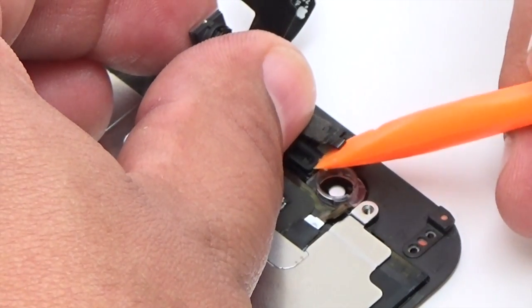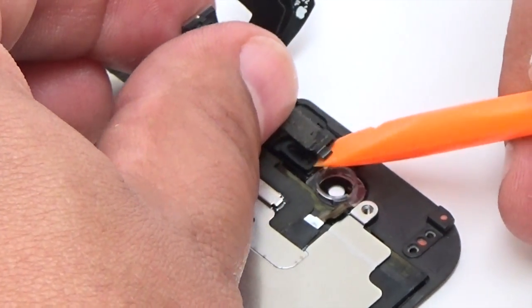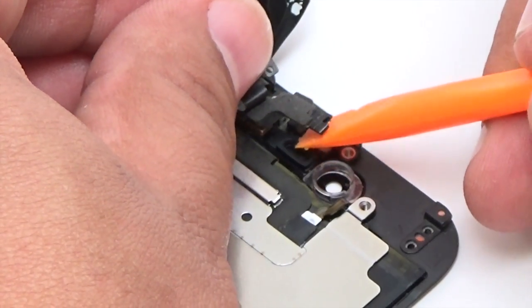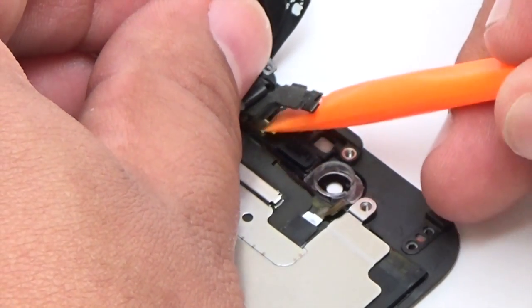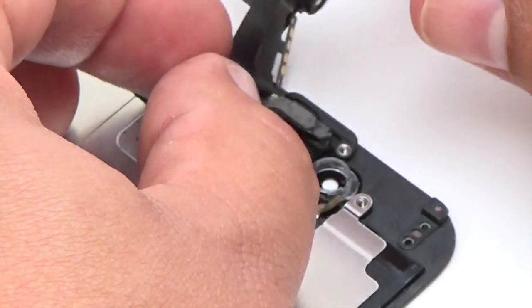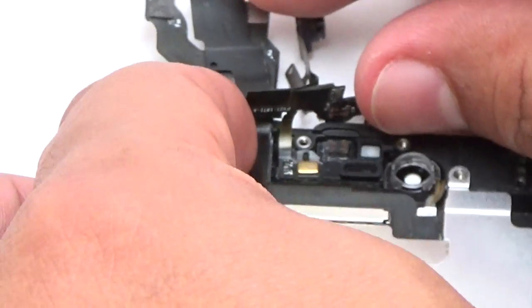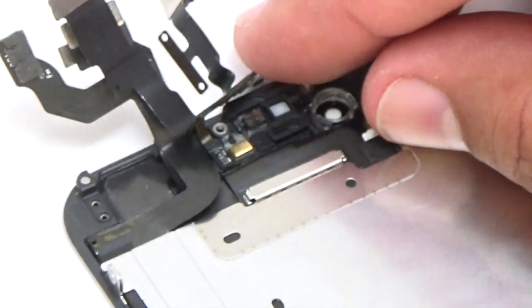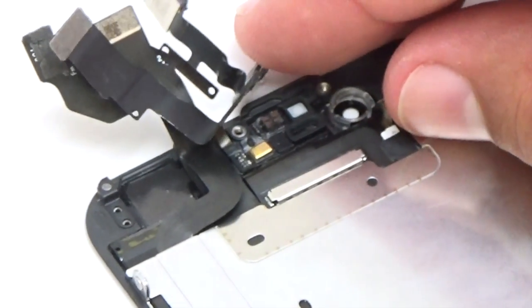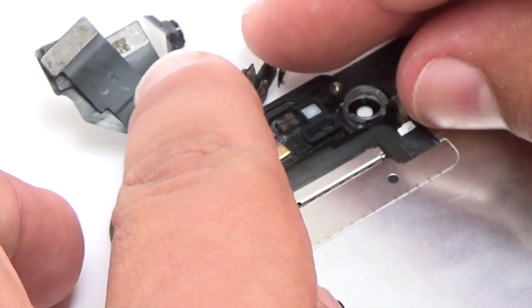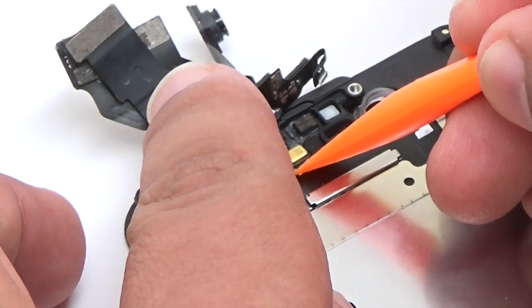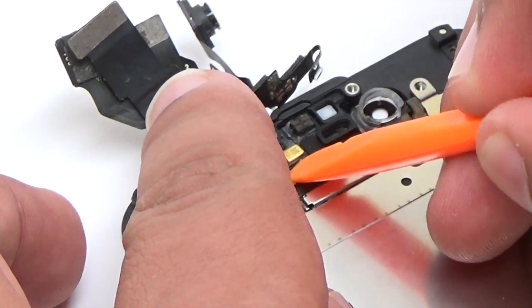Use the flat end of a spudger to gently pry up the sensor cable from its recess in the display assembly. Pry up the microphone portion of the front-facing camera and sensor cable from the display assembly.